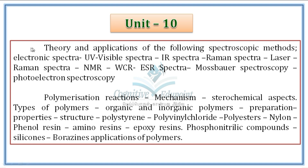The syllabus for unit 10 covers various spectroscopy: UV-visible, IR, Raman, laser, NMR, ESR, Mossbauer, and Photoelectron spectroscopy. The second half covers polymers — molecular weight and different polymer examples. Inorganic topics include phosphonatrally compounds, silicones, and borazines. This is an important unit, with overlapping concepts especially in spectroscopy. Let's go through the questions one by one.